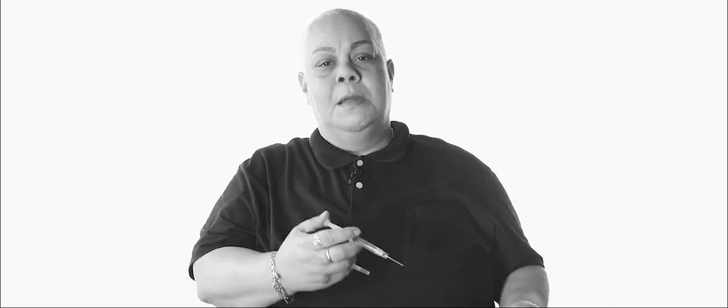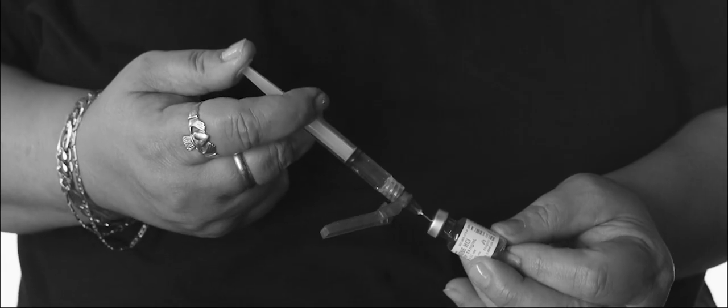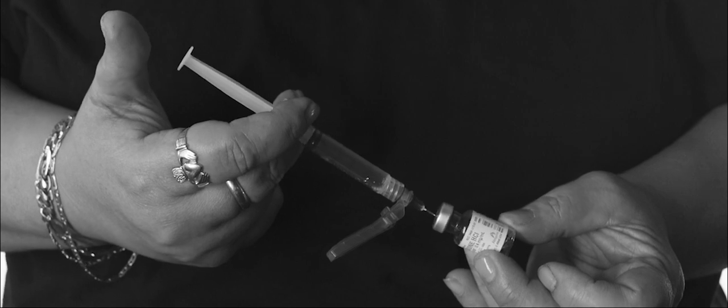Take the cap off the syringe. Fill the barrel with air. Put the syringe into the vial at an angle. Inject all of the air into the vial, making sure the needle tip is in the medication.